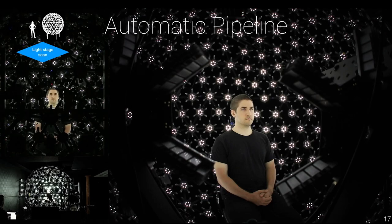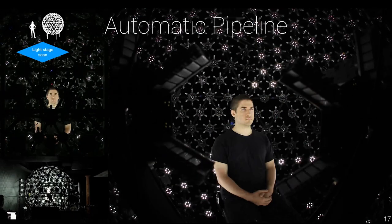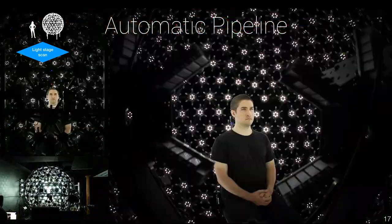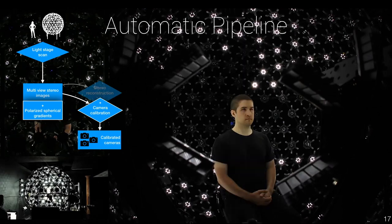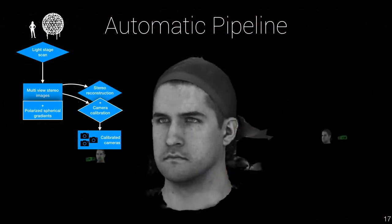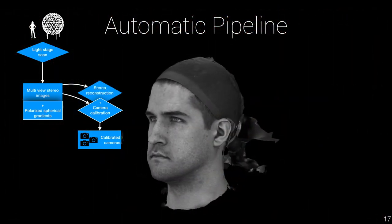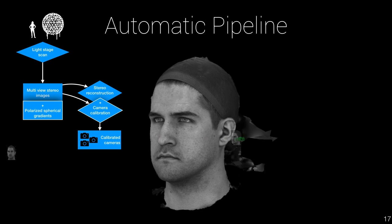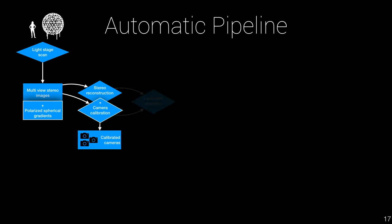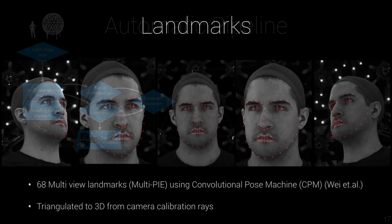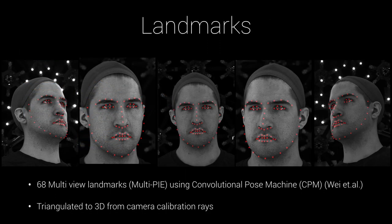The automatic scanning pipeline starts with a set of multiple static scan expressions, known as FACS shapes, for the Facial Action Coding System. We produce a stereo base mesh geometry using regular photogrammetry, along with camera calibration and landmark detection of 68 feature points known as the multi-PIE markup. These are located using a machine learning model called a convolutional pose machine, and then triangulated to 3D from multiple camera views.